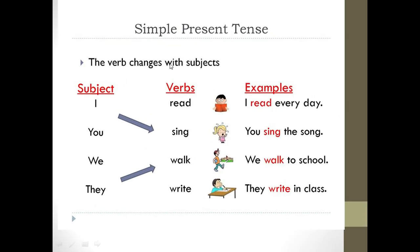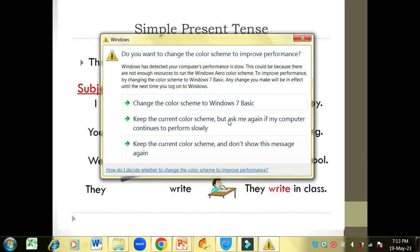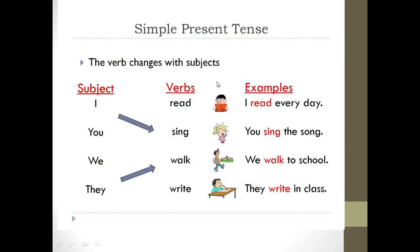In simple present tense, the verb changes with the subject. If your subject is plural — we, I, you, they — the verb does not take 's'. I and you are singular, but they follow plural rules. I read every day — you cannot say I reads every day. You sing the song, we walk to school, they write in class. If your subject is plural, you do not use 's' with the verb.